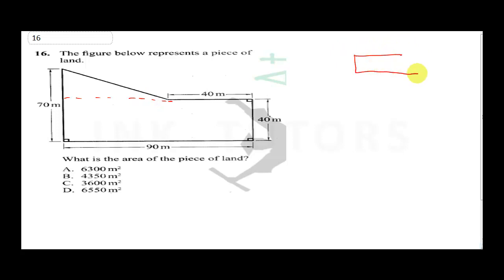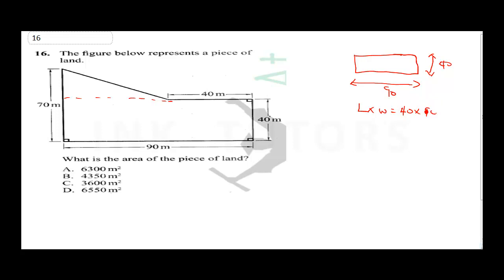Let's bring up our rectangle. From here to here it's 40, and the width is 90. For the rectangle, it's length times width, which is 40 times 90. That will give us 3600 metre square.